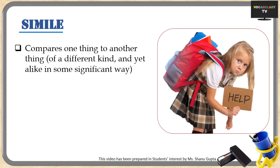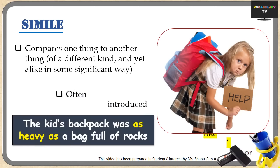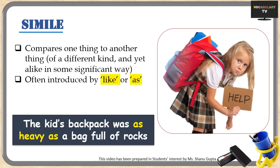For example, when I say 'the kid's backpack was as heavy as a bag full of rocks,' I clearly know that the comparison is on weight. Another way of saying the same is 'the kid's backpack seemed like a bag full of rocks.' Structure-wise it is still a simile, but we have to think a bit to conclude they are comparing the two items to emphasize weight. Similes are introduced by the words 'like' or 'as.'